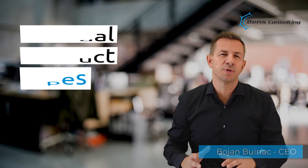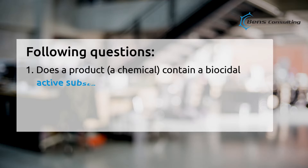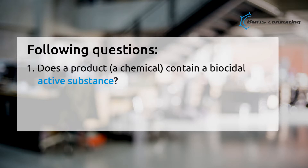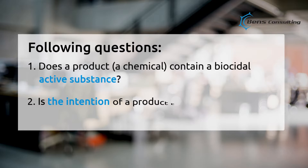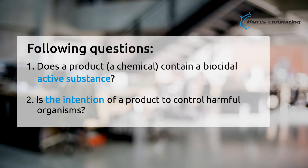In a previous video, I showed you how to identify a biocidal product. The most simple technique is to ask the following questions: First, does a product or a chemical contain a biocidal active substance? This is a substance that is recognized to act against harmful organisms. And the second question is: is the intention of a product to control harmful organisms? If the answer to one of the questions is negative, the product cannot be considered a biocidal product and is therefore out of the scope of the biocidal product regulation.